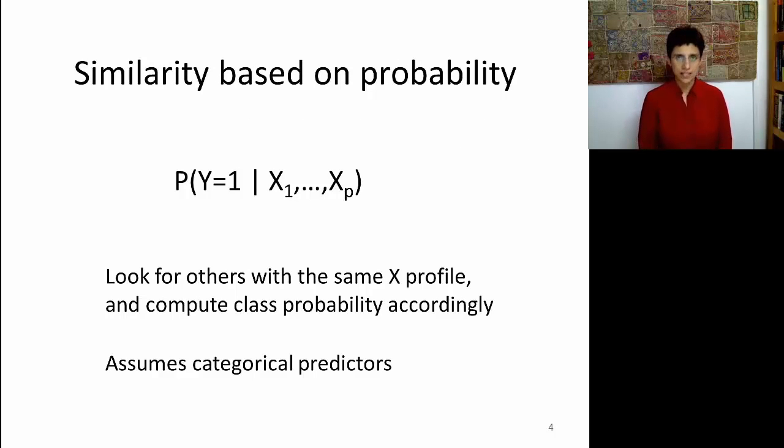So how does this work? What we're trying to estimate is the probability that the output is equal to 1, let's assume it's a binary output, given a certain predictor profile. The idea is to look for other users or other records that have the exact same X profile, and then compute a class probability based on that subgroup. Now unlike other methods, this particular method can only use as inputs categorical predictors. So if you have anything that's numerical in a predictor, you'll have to convert it into a categorical predictor.